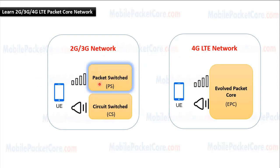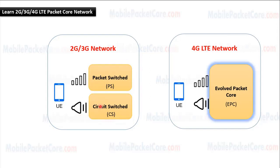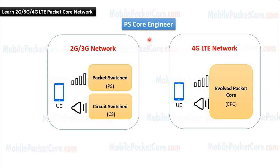The core network in 2G/3G contains the packet switch domain that handles the data sessions of the users, and the circuit switch domain that handles the voice calls of the users, while the core network in 4G LTE contains only one domain — the evolved packet core — that handles both data sessions and voice calls.